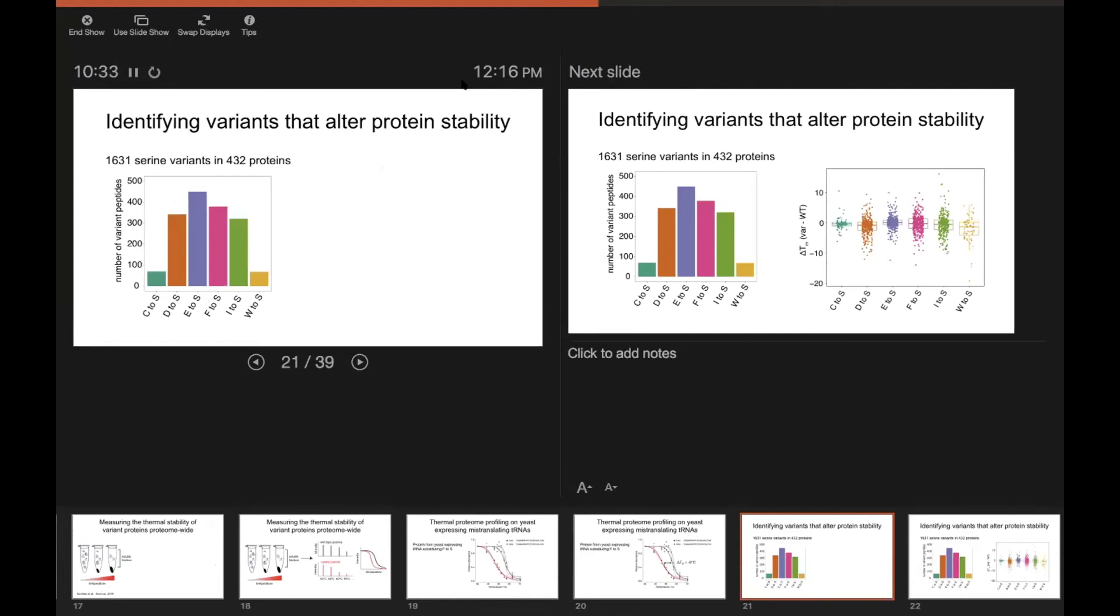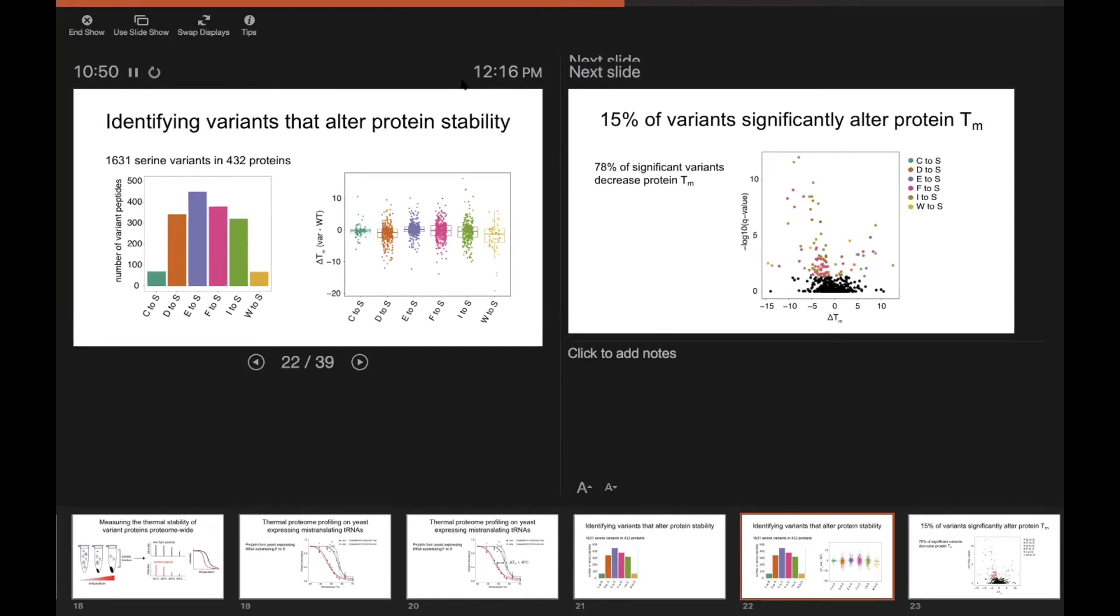We actually performed this experiment on six different yeast strains expressing tRNAs that substitute serine at sites of six different amino acids. And in these six experiments total, we identified about 1,600 pairs of variant and wild-type peptides corresponding to about 400 proteins.